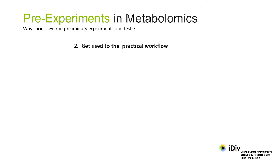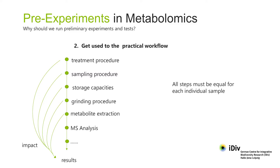Reason two: learning the practicalities of the metabolomic workflow. The more practice you get, the better the quality of the data you produce. Every step of a new workflow involves uncertainty and is prone to errors, from the original treatment procedure to the efficiency of grinding the plant tissue. A preliminary experiment gives you the opportunity to get to know the different techniques, methods, and data analyses you'll need. The experience gained will save you time, resources, and money when you come to do your main experiment.